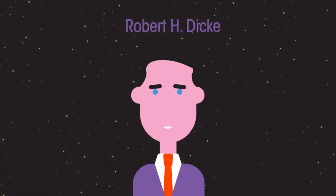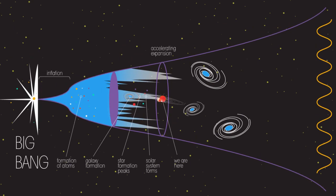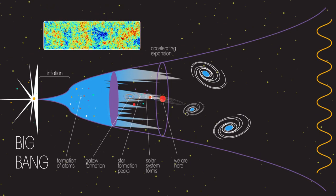Around the same time, Robert Dickey was investigating something called the Big Bang Theory. He thought that if this theory for the origin of the universe was correct, the whole universe should still have some microwaves present. Then Dickey heard about Penzias and Wilson's experiments.